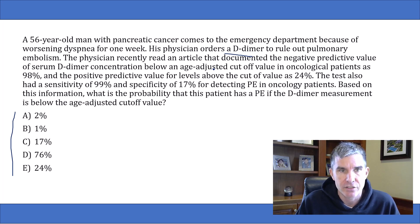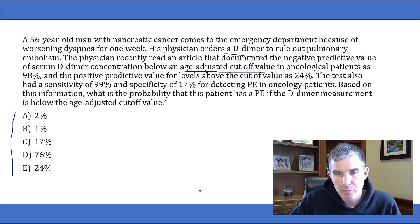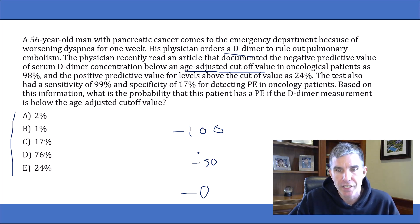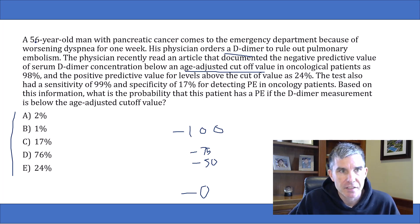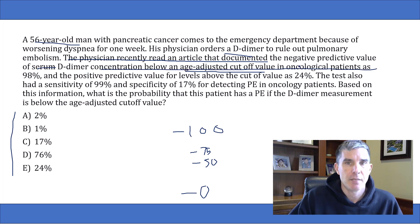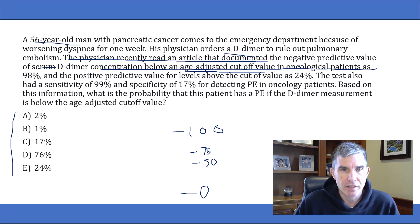The rest of the words are pretty much nonsense designed to confuse you. They're saying there's an age-adjusted cutoff value, but that's not important to the question. An age-adjusted cutoff value means, for example, that values for D-dimer could range from zero to 100 — for patients under 20 the cutoff for PE might be 50, meaning values above 50 suggest PE and below 50 suggest no PE, while for patients over 20 the cutoff might be 75. But it's irrelevant because we're applying it to this 56-year-old man. We can cross off all that extra language and just read: the negative predictive value of D-dimer is 98%. That's all you need to know.